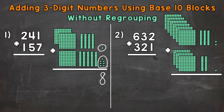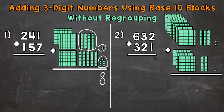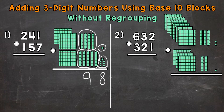Now we work our way to the left, so we have the tens place next. We have 4 groups of 10 plus 5 groups of 10, or 40 plus 50. In the number 241, we have a 4 in the tens place — that represents 4 groups of 10 and has a value of 40. In 157, we have a 5 in the tens place, meaning 5 groups of 10 with a value of 50. So 4 groups of 10 plus 5 groups of 10 gives us 9 groups of 10, and that 9 has a value of 90.